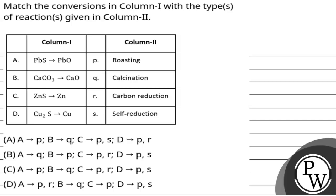Hello, let's read this question. The question says, match the conversions in column 1 with the type of reaction given in column 2. The key concept of this question is extraction processes.